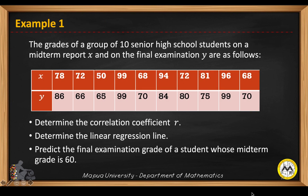Let's have an example. The grades of a group of 10 senior high school students on a midterm report (x) and on the final examination (y) are given. We are asked to determine the correlation coefficient r, determine the linear regression line, and predict the final examination score of the student whose midterm grade is 60 points.